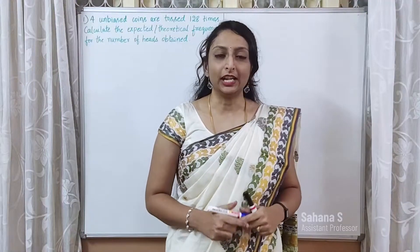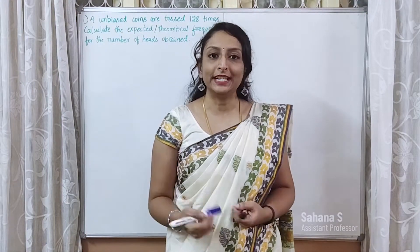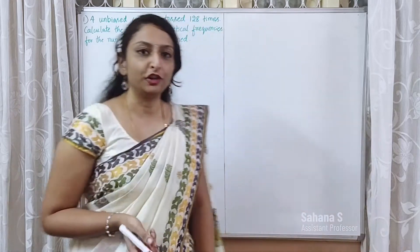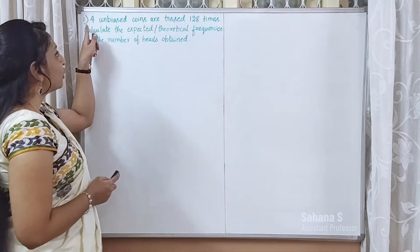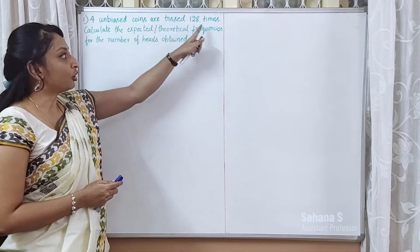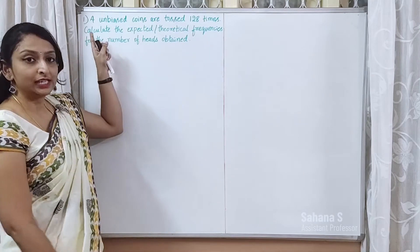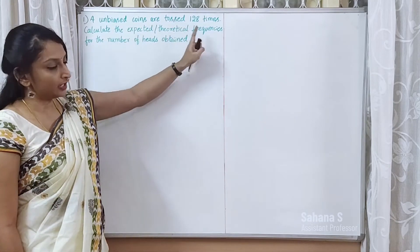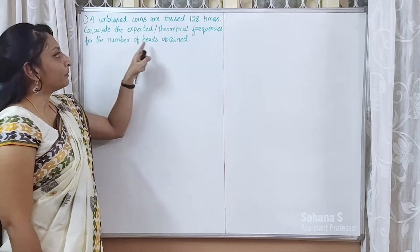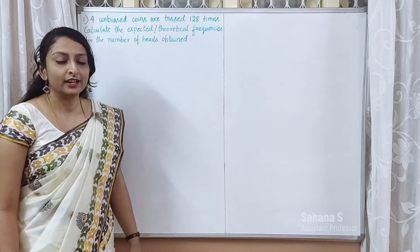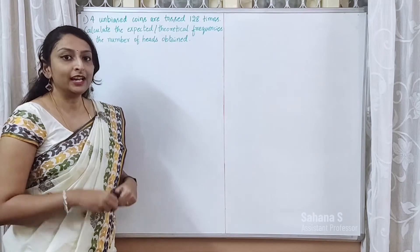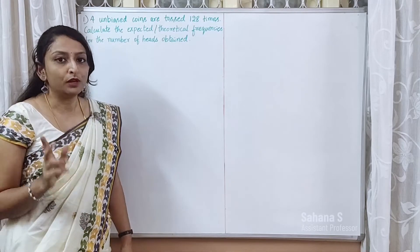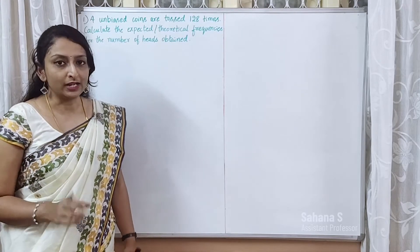Hello all. In this video, we are going to be fitting a binomial distribution problem. The problem is: four unbiased coins are tossed 128 times. Calculate the expected or theoretical frequencies for the number of hits obtained. The coin tossing problem always comes in binomial distribution.